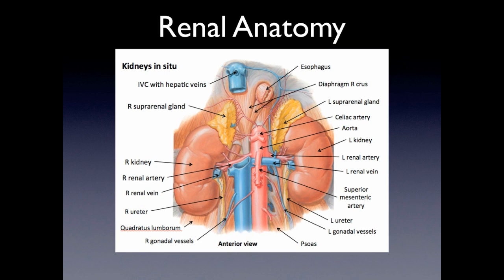Here you can see an anatomy of the kidneys in SIDU, and you can see the relationship between the major vessels — the aorta, the inferior vena cava, and the suprarenal glands.